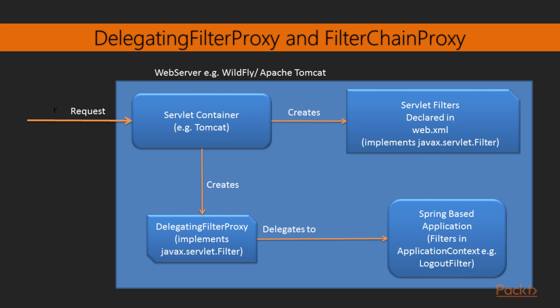Once a request comes in — say the web server is WildFly or Apache Tomcat — the servlet container will read the request. If you have created the servlet filters as implementations of JavaX servlet filter in the web.xml, the servlet container creates those filters for you. But since you are using Spring, which uses the power of dependency injection and creates beans, why not create filters in your application context where you have control over them? That's where the Delegating Filter Proxy comes in.